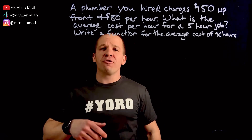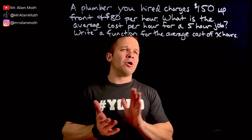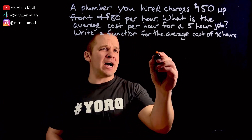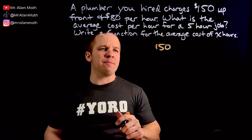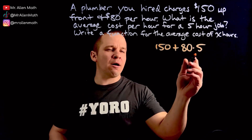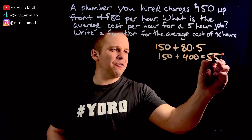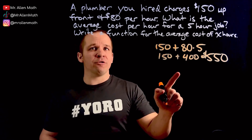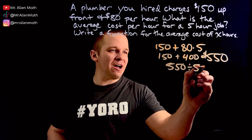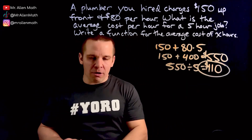We also want to write a function for the average cost of X hours — any number of hours, whether it's a two-hour job, an eight-hour job, whatever it may be. Let's do the one with five hours first. We have $150 up front, flat fee, and then it's $80 for each hour after. How many hours do we have? Five hours. So that's $400, and then we got $150 — that is $550 for that job. The average: divide by 5, $550 divided by 5, that gives me $110 per hour. The average cost is $110 per hour.